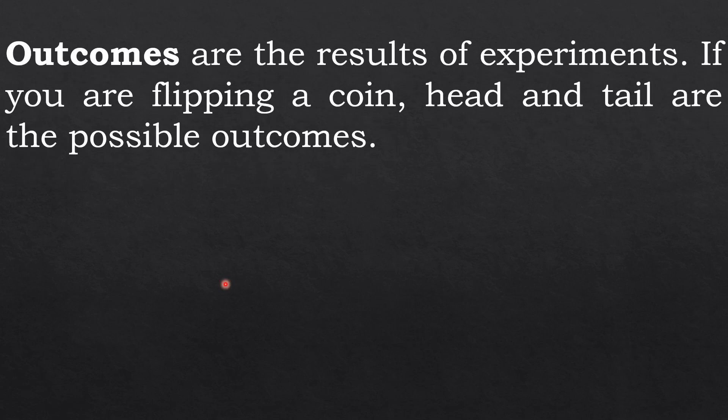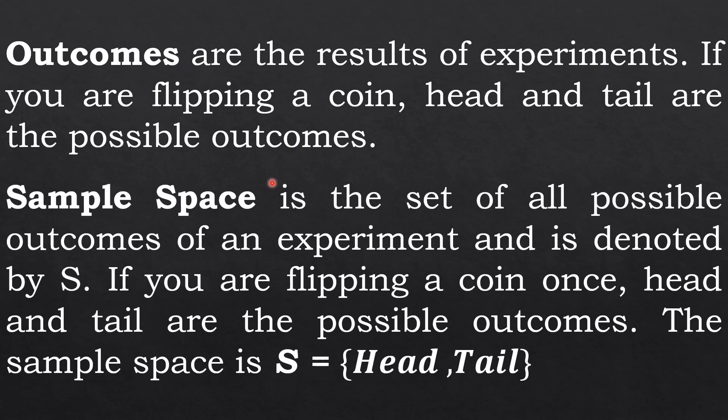Next we have outcomes. Outcomes are the results of experiments. If you are flipping a coin, head and tail are the possible outcomes. Sample space is a set of all possible outcomes of an experiment and is denoted by S. You are flipping a coin once, head and tail are the possible outcomes. Sample space is S equals head and tail.